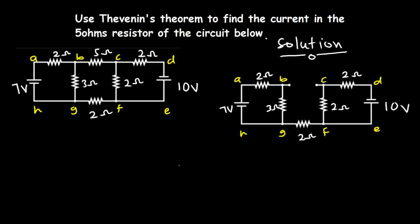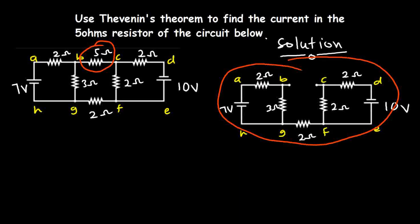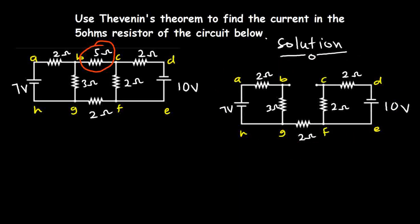To calculate VTH, I am going to remove the 5-ohm resistor, which is the load resistor from the circuit. After removing it, I will name the terminals as A and B. I can then name this open circuit voltage as VTH, and consider the direction to be in this direction. We are going to consider the circuit in loops so that we can calculate for the value of VTH.